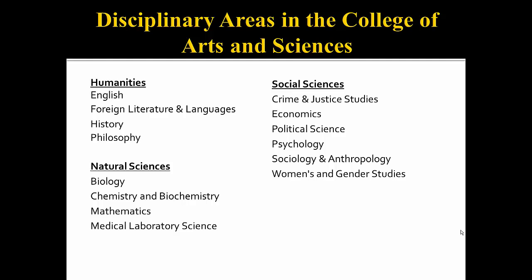In the humanities, we have English, foreign languages and literature, history, and philosophy. In the natural sciences, we have biology, chemistry and biochemistry, mathematics, and medical laboratory science. In the social sciences, we offer crime and justice studies, economics, political science, psychology, sociology and anthropology, and women's and gender studies.